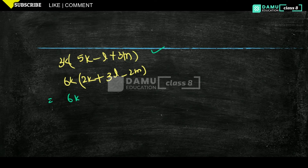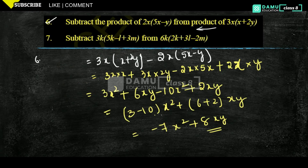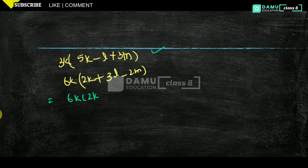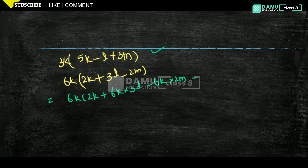From the right side you have to come: 6k into 2k, plus 6k into 3l, minus 6k into 2m. That is the 6k part. Now subtract 3k, so 3k into 5k minus l plus 3m.